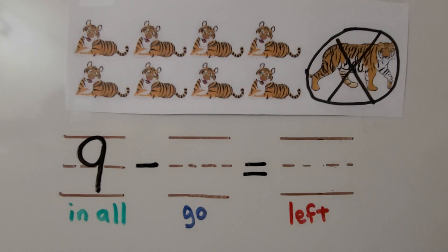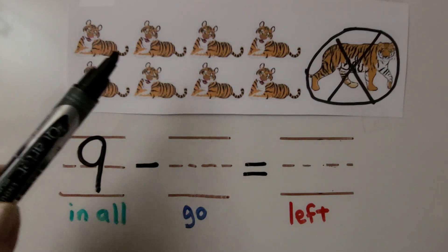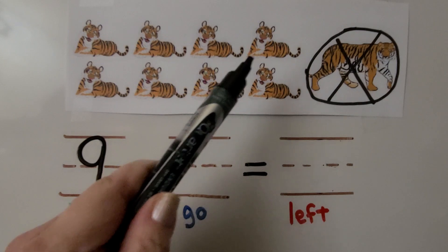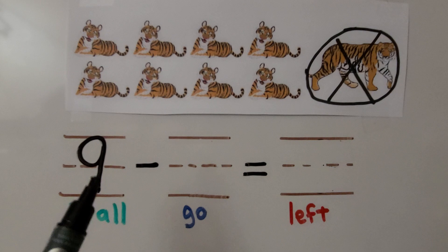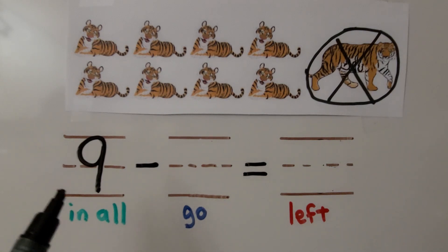Look at this picture. We have tigers. How many tigers are in the picture? We can count them. One, two, three, four, five, six, seven, eight, nine. There are nine tigers in all.